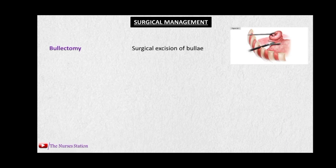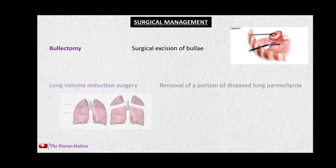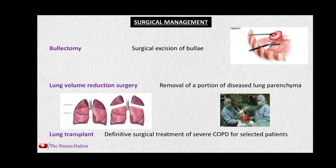Surgical management includes bullectomy, which is the surgical excision of bullae — enlarged air spaces in the thorax that do not contribute to ventilation. Next is lung volume reduction surgery, used when the disease is localized to certain parts of the lungs; it involves removal of a portion of diseased lung parenchyma so the healthy lung can expand and function properly. Lung transplant is the definitive surgical treatment for severe COPD in selected patients.